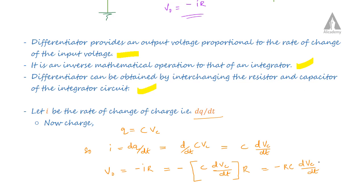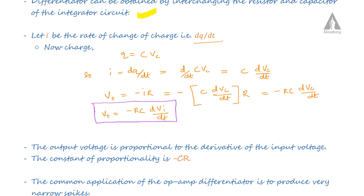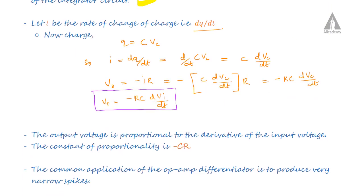The voltage across the capacitor is proportional to the input voltage, so we can write V0 equals minus RC times d(Vin)/dt. This is the equation for the output voltage of the differentiator. The output voltage is proportional to the derivative of the input voltage, and the constant of proportionality is minus RC.